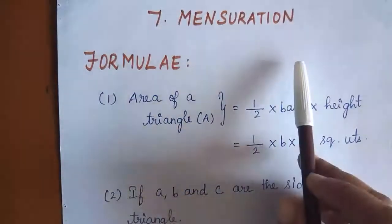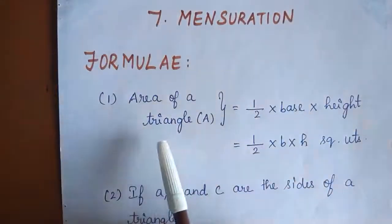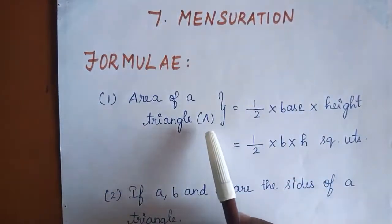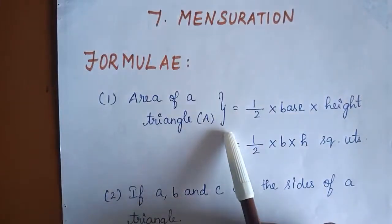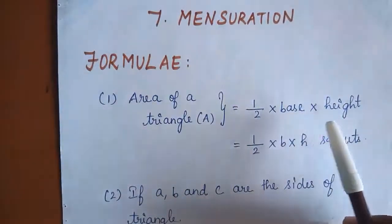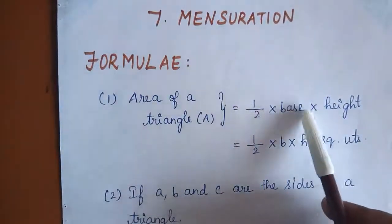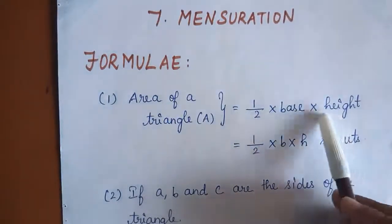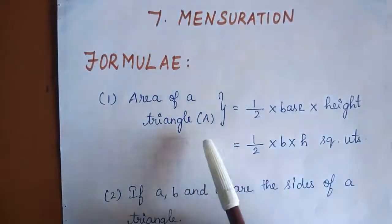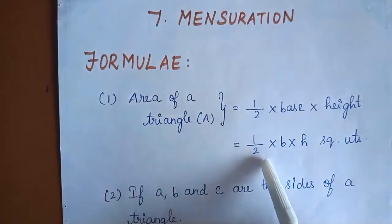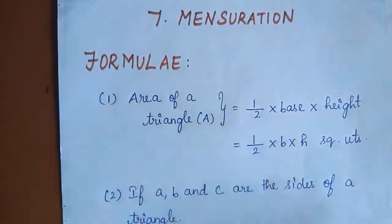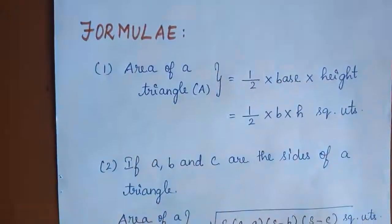Unit 7 Mensuration — Formula 1: Area of a triangle. We know the formula: A is equal to half into base into height. We represent base as B and height as H. Therefore, the area of a triangle formula is equal to half into B into H, in square units.